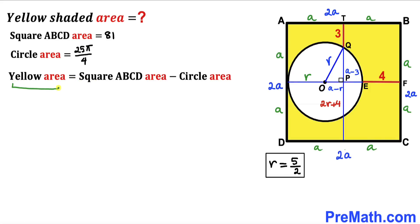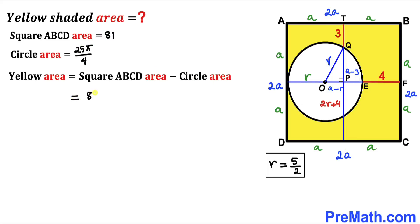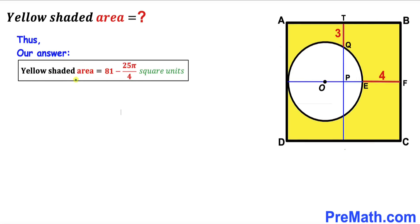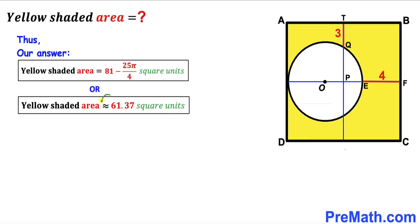For the final step, the yellow shaded region area = area of square − area of circle = 81 − 25π/4 square units, which is approximately 61.37 square units. Thanks for watching — please don't forget to subscribe to my channel for more exciting videos!